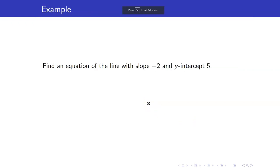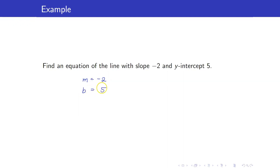Suppose we want to find the equation of a line with slope negative 2 and y-intercept 5. This just means that m is negative 2 and your b is 5. Hence, the equation is y equals negative 2x plus 5.